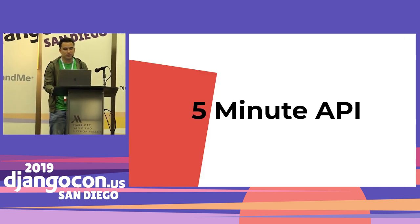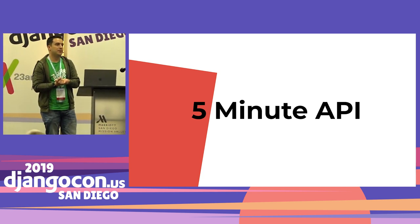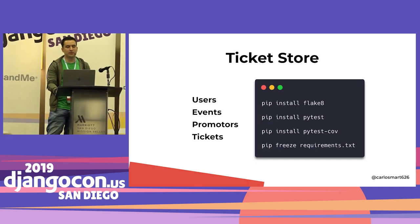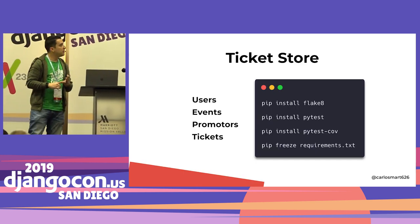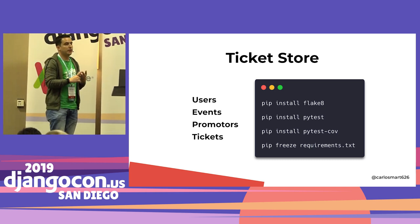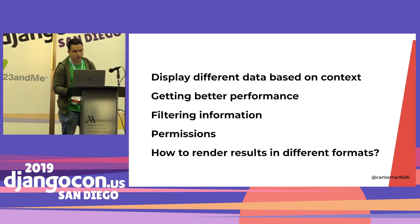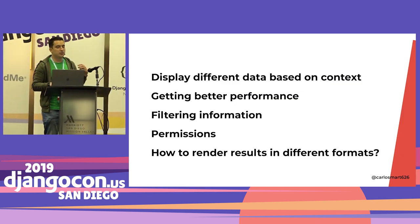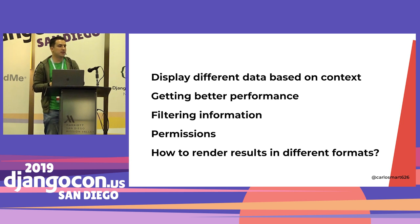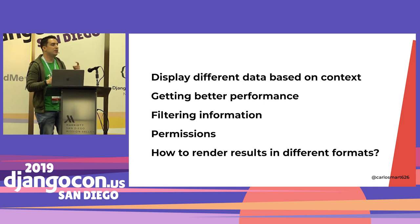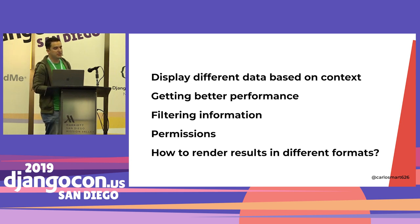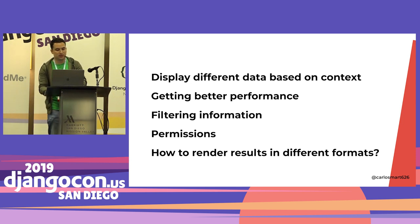Let's begin. We're going to start with a five-minute API. We're going to do something like have users, create events, have promoters for events, and create tickets. While we are doing this, we're going to think about five topics: how to display different data based on context — for instance, not getting the same fields for an event inside a ticket. How to get better performance. How to filter information inside the API. Configure permissions, and how to render results in different formats.